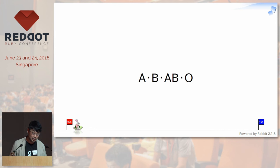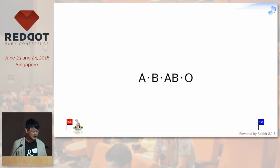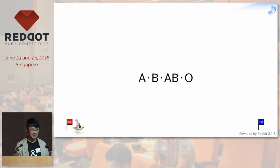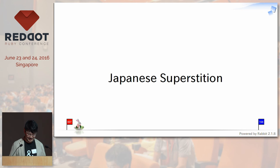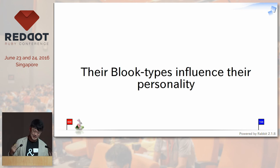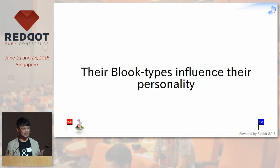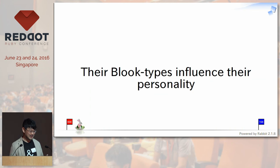Do you know your own blood type? Very interestingly, almost all Japanese know their blood types, according to some superstition. We Japanese — most of us — believe that our blood types influence our personality. So our personality can be classified according to our blood types.